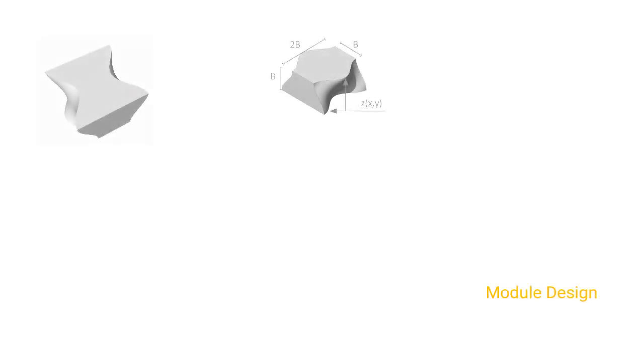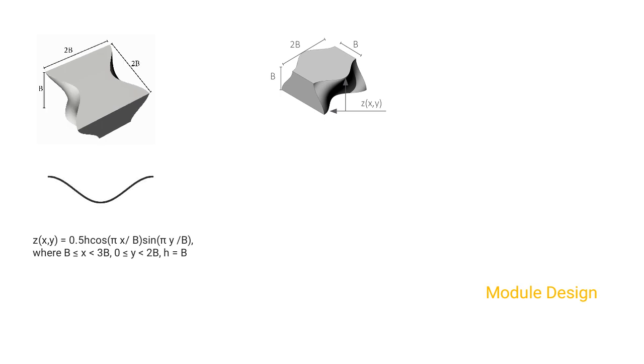The proposed module is based on osteomorphic topological assembly. The design of the module is based on a sine cosine trigonometric identity as shown: z(x,y) = 0.5 h cos(πx/B) sin(πy/B), where B ≤ x ≤ 3B, 0 ≤ y ≤ 2B, and h = B.